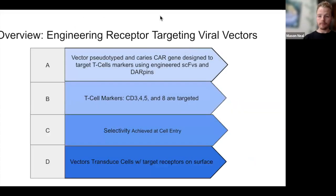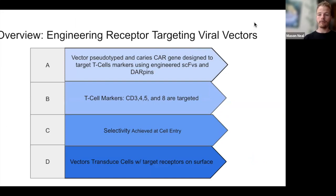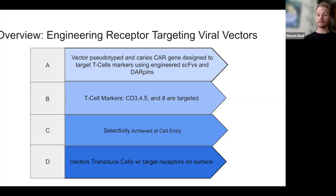So looking at surface engineering, this is a quick overview of what we're going to be talking about. Pseudotyping involves specifically designing a viral vector to carry the CAR gene and then target T cell markers such as CD3, CD4, CD5, and CD8. Selectivity is achieved at cell entry, and then the vectors transduce the cell with the target receptors on the surface.